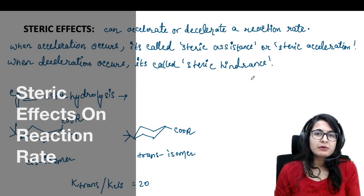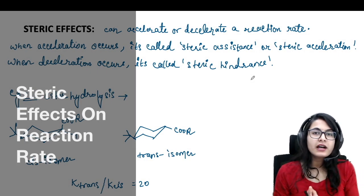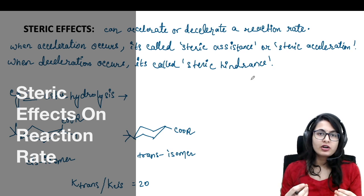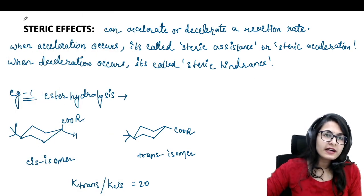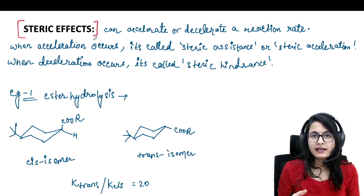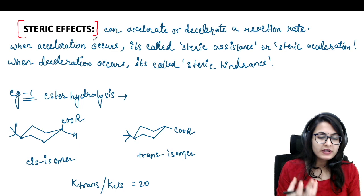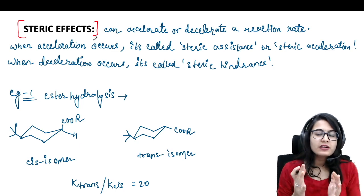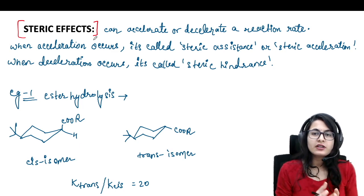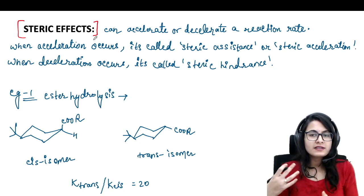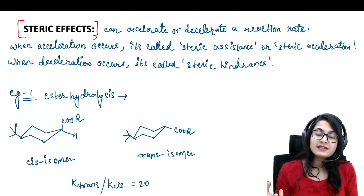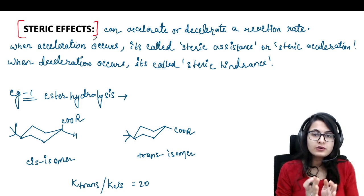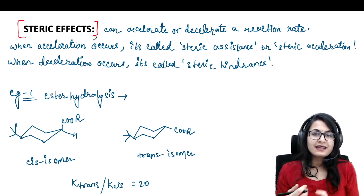Hello everyone, welcome to Rasan Academy once again. So here we are discussing another important short topic on stereochemistry, that is steric effects. We are talking about the steric effects in the reactions of cyclohexane. You must have already studied some examples in which a bulky group on the axial position is going to cause steric hindrance, and sometimes the bulky group is also causing steric assistance. So what are these two terms: steric hindrance and steric assistance?